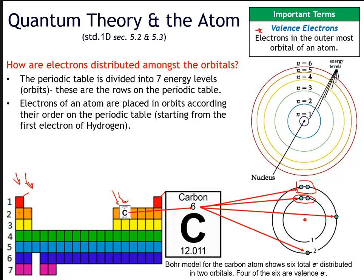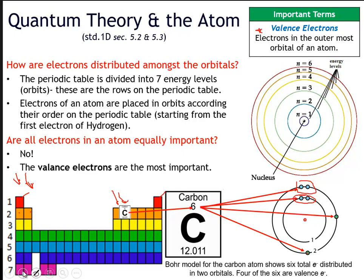As you can see, the orbitals get bigger as you draw them, and you can fit more electrons further away from the nucleus. So are all electrons in the atom equally important? No way. The valence electrons are the most important electrons on that element. These guys right here are the valence electrons, and as you can see, carbon's got four valence electrons.